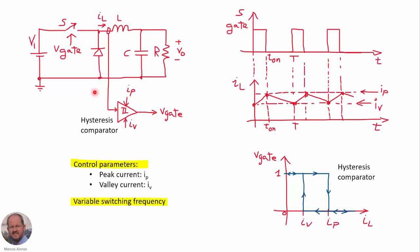Here we have the buck converter operating under hysteresis control. We measure the current through the inductor and we send this information to the hysteresis comparator. We have two levels: the peak value of the current and the valley value of the current. And by comparison of the current with these two levels, we generate the gate voltage for the switch.